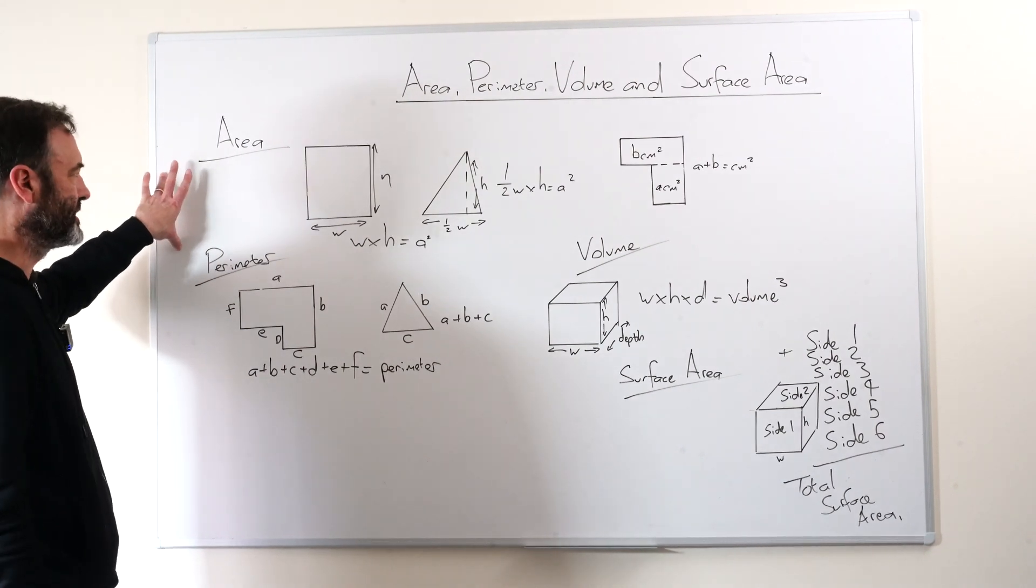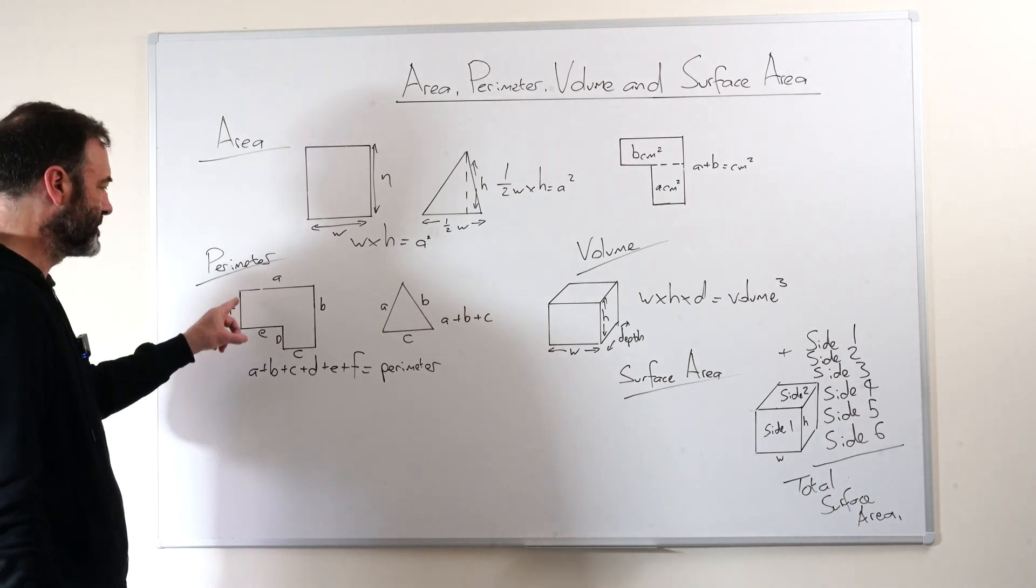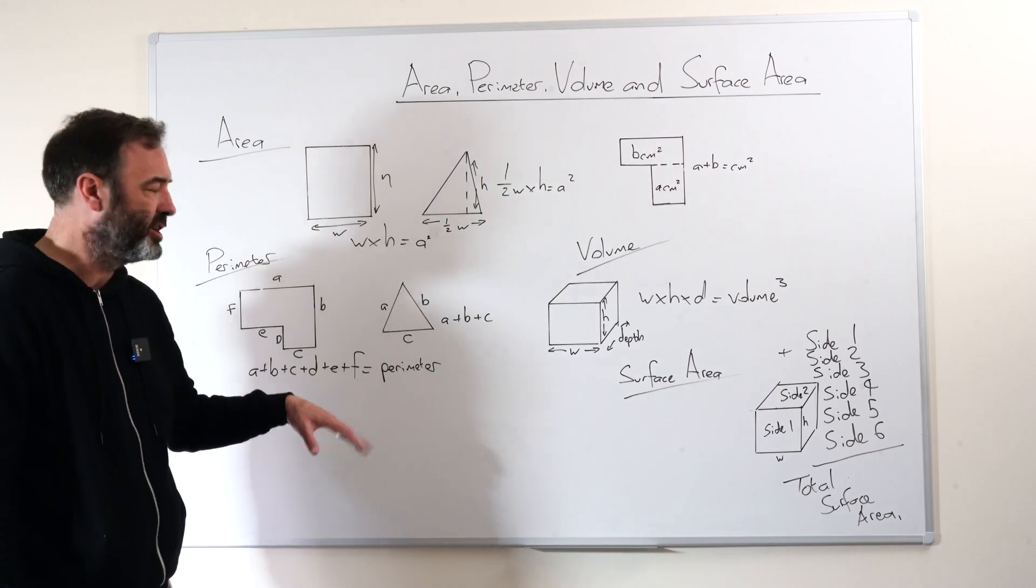And that's dangerous in the exam to get this and this confused. This is just the distance. You're just adding up all the sides. And it's just centimetres or metres or whatever. There's no square or cube.